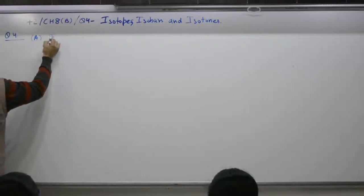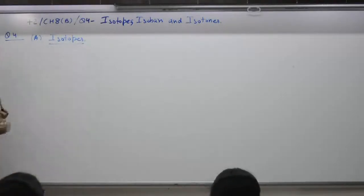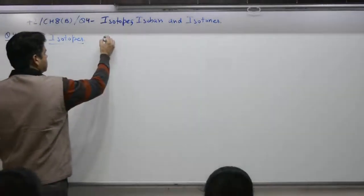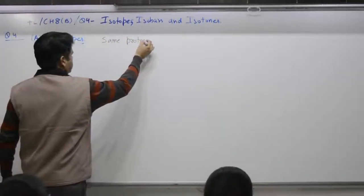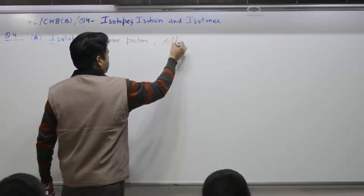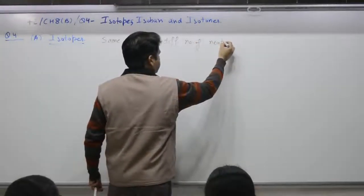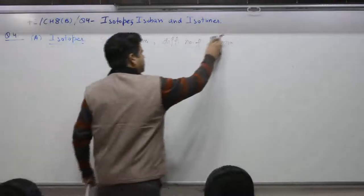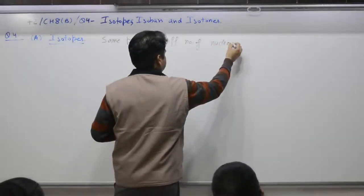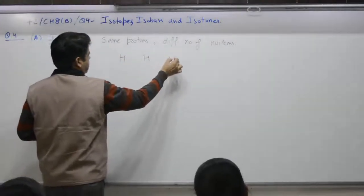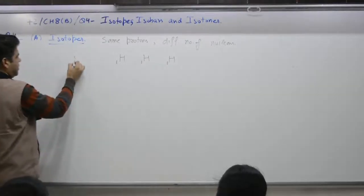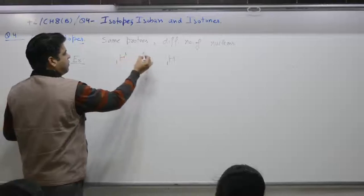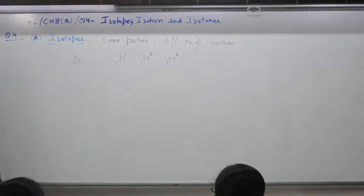Part A: Isotope. Statement is same number of protons, different number of nucleons. Same number of protons, different number of nucleons, or you can say neutrons. Nucleons is a better word though the result is same. Reason is hydrogen: same number of protons, one, one, one. Total number of nucleons one, total number of nucleons two, total number of nucleons three. Isotopes.